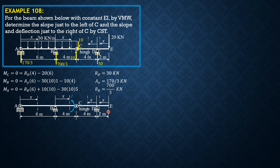Considering CDE again due to that couple: summation of moments about C equals zero, so R_D times 4 equals zero, meaning R_D is zero and the reaction here is also zero. Considering ABC: summation of moments about B equals zero gives A_y times 6 minus 1 equals zero, so A_y equals 1/6. From summation of forces in y, the reaction at B is 1/6 downward, as shown.